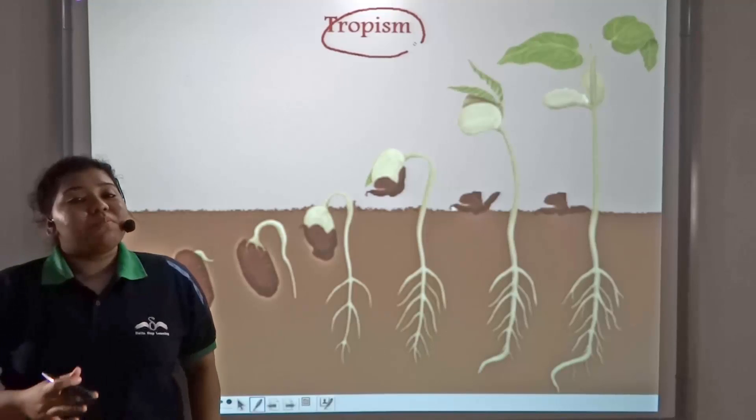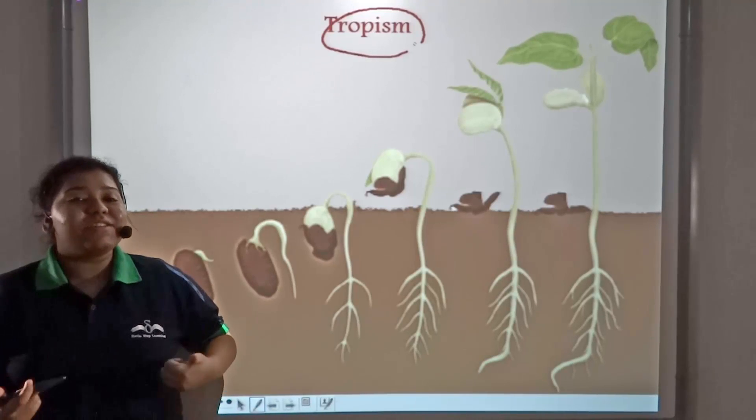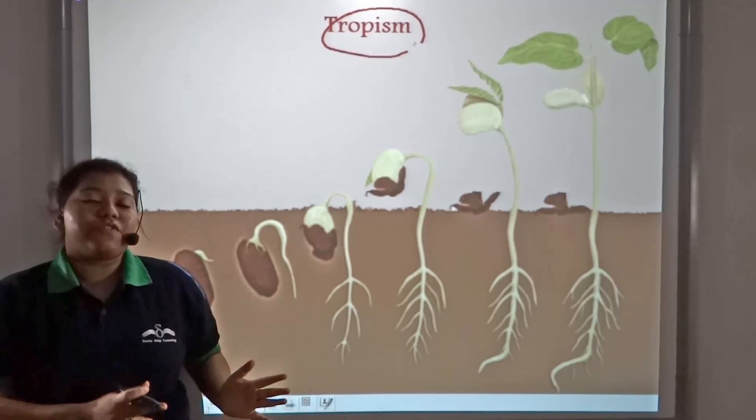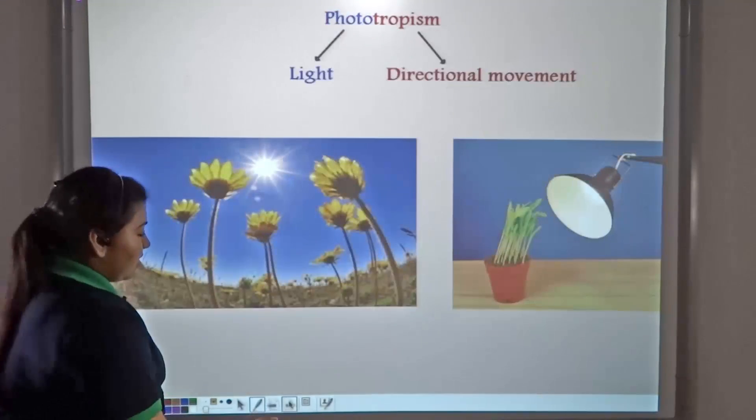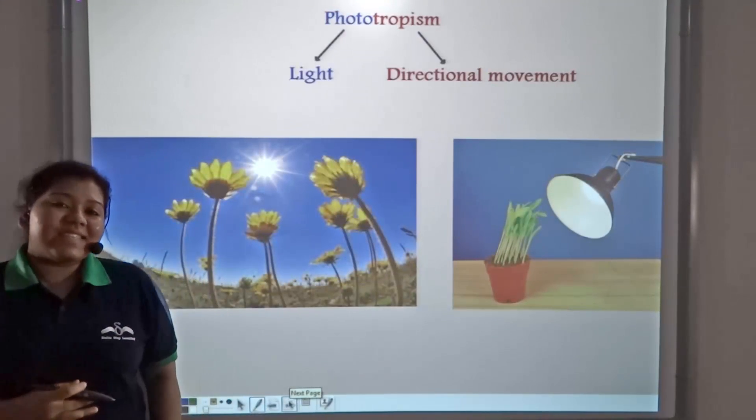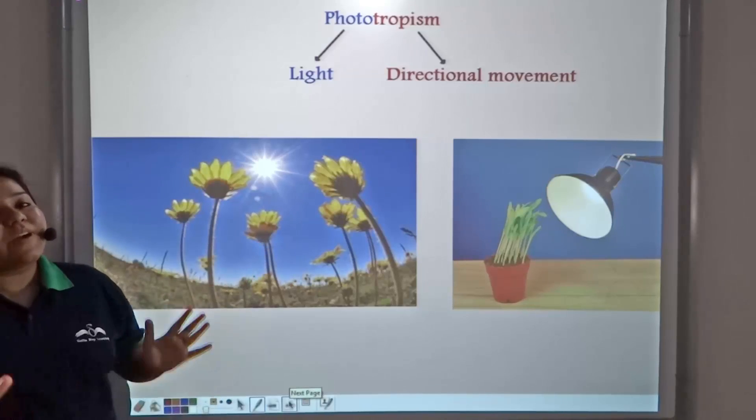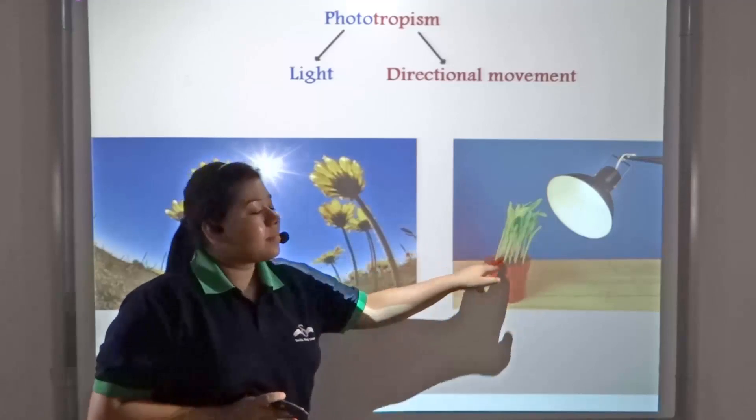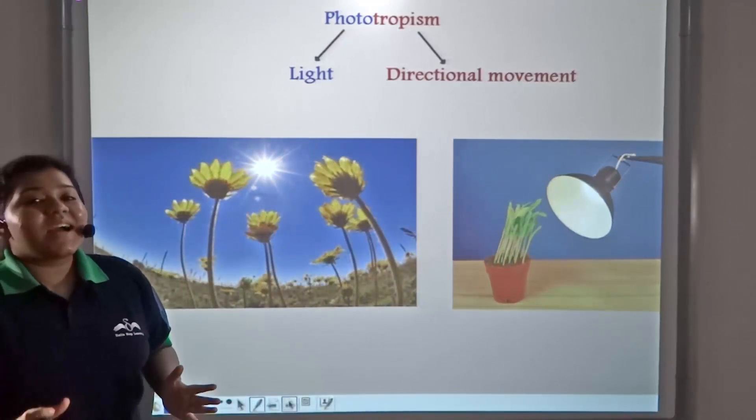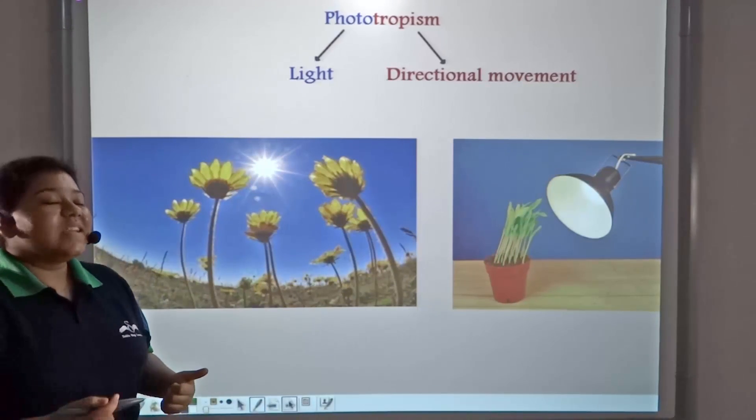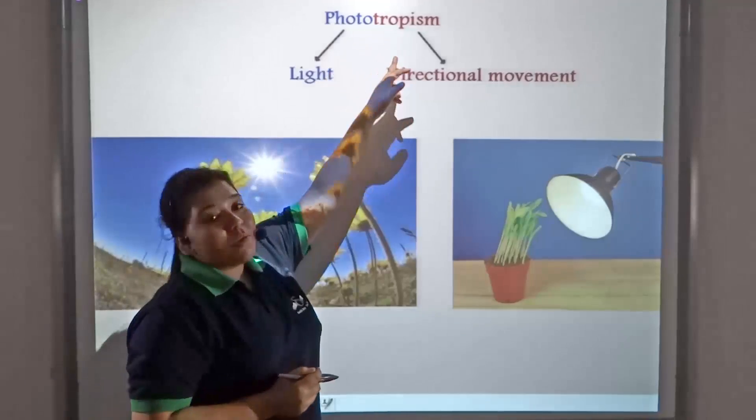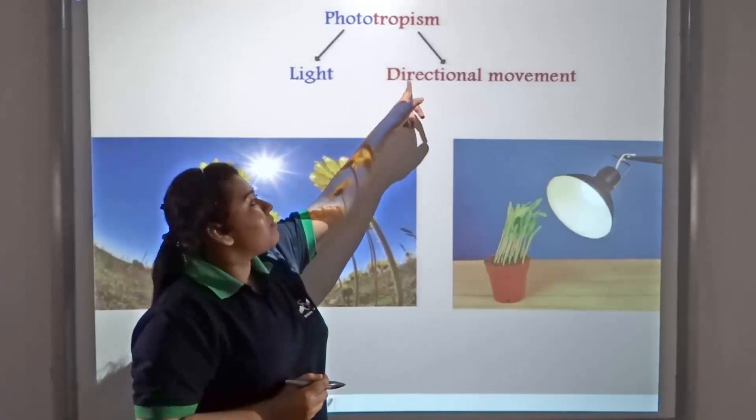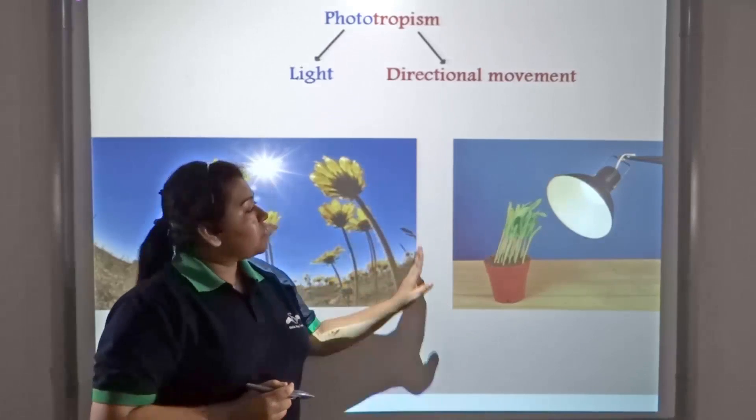Plants showing directional movement grow either towards the stimulus or away from it. Shoots always grow towards the light source. This kind of directional movement is known as phototropism, where photo means light and tropism means directional movement.